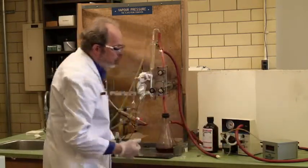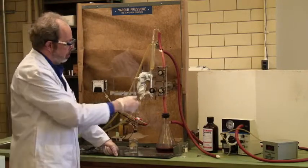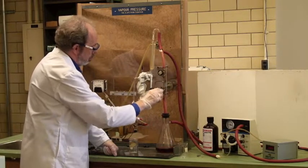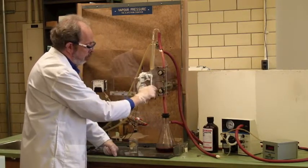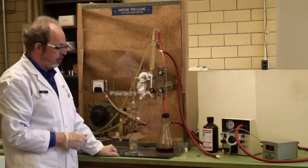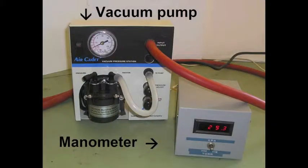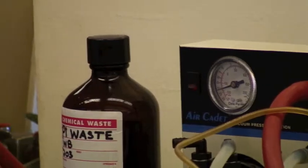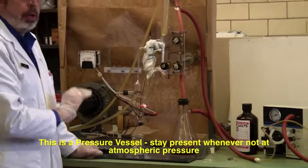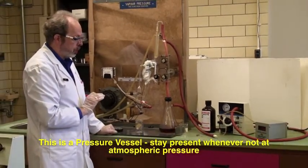When I've got the manometer on, and open this to the system, and close the reserve valve, you'll notice the pressure is dropping 64, 55, and the pressure inside the system is dropping. Now, this is a pressure vessel, so whenever you have got something other than atmospheric pressure in this apparatus, you need to be present. You can't walk away from it when it is under reduced pressure.